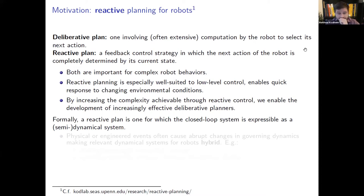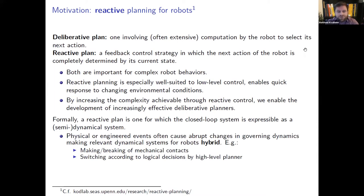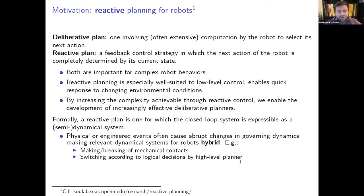Physical or engineered events often cause abrupt changes — discontinuities — in the governing dynamics, making hybrid models the most useful. Examples include making and breaking of mechanical contacts: a legged robot's feet planting and lifting off, a robotic arm grasping and placing objects, or systems where you want to switch continuous control laws based on high-level logical decisions.